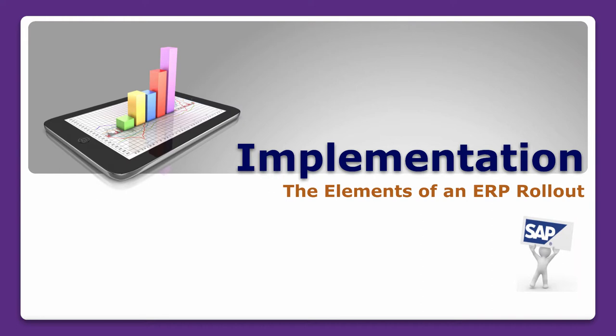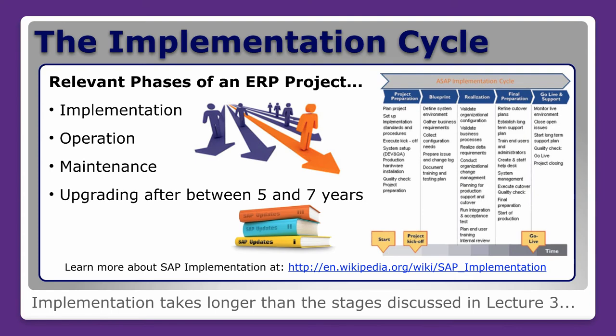The first step is to look at the elements of an ERP rollout. Here we have the implementation cycle. Implementation, operation and maintenance generally involves an upgrade of most systems between five and seven years from when the system was first put in. On the right-hand side you can see the ASAP implementation cycle, which consists of project preparation, blueprinting, realization, final preparation, and go live and support.